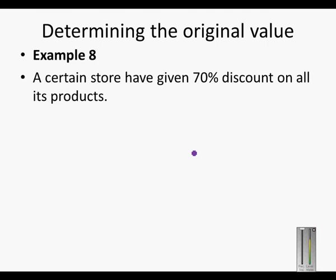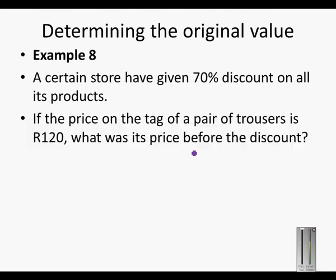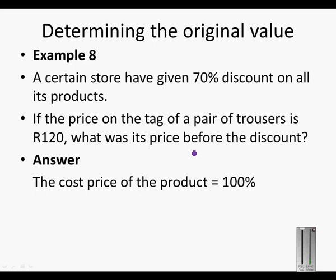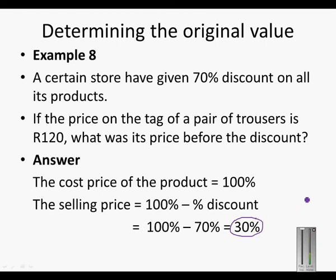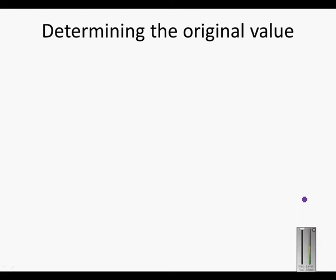A certain store has given a 70% discount on all its products. If the price on the tag of a pair of trousers is 120 rand — this is the new tag price after the discount — what was its price before the discount? The original price is 100%, and the selling price is 100% minus the percentage discount. So we only need to pay 30% of the original price, which is a very nice discount.